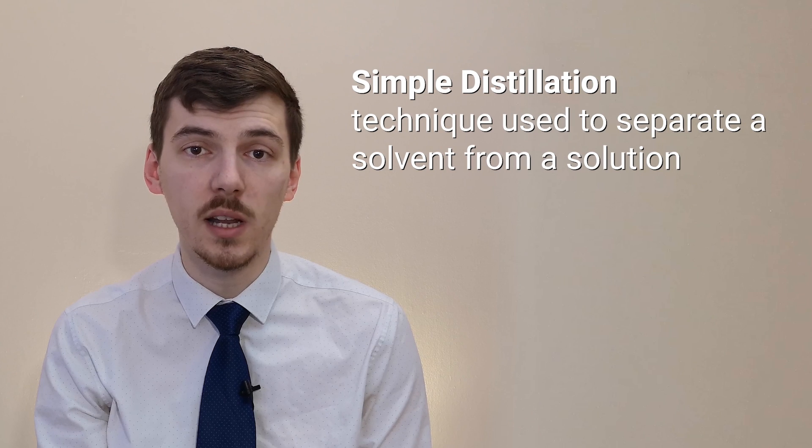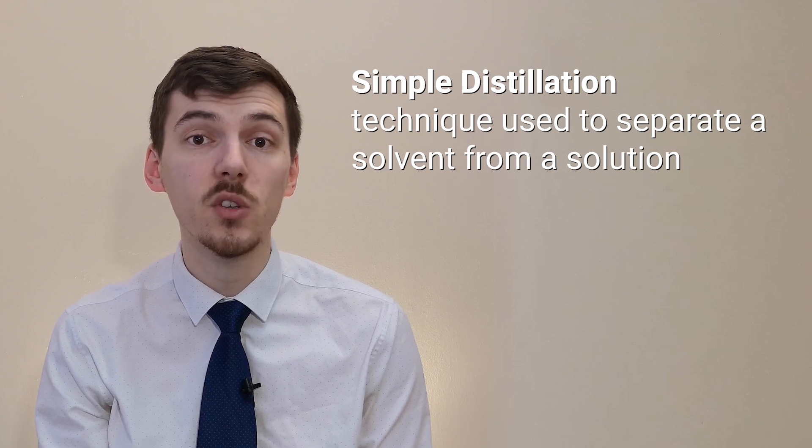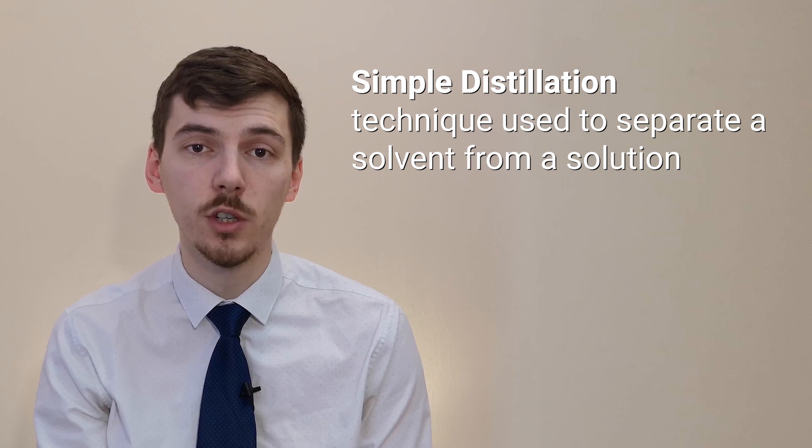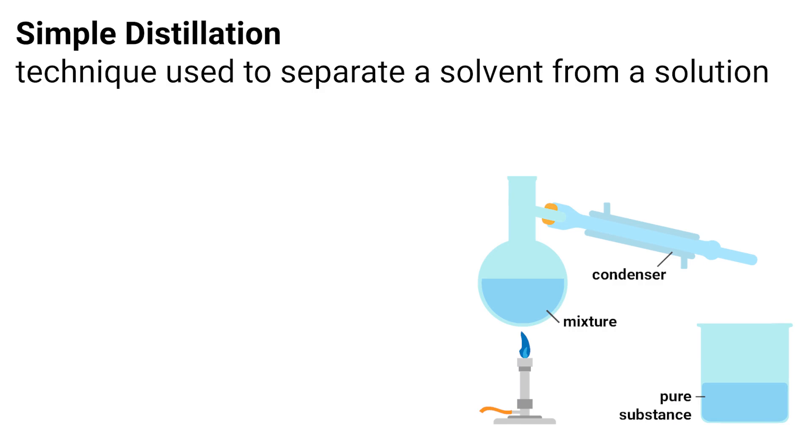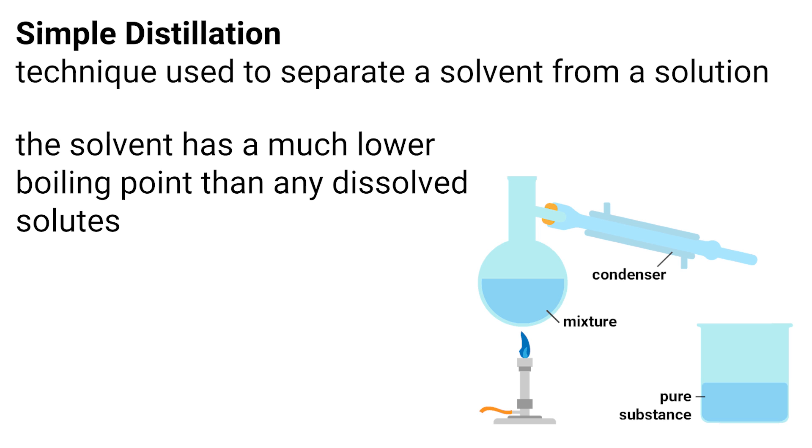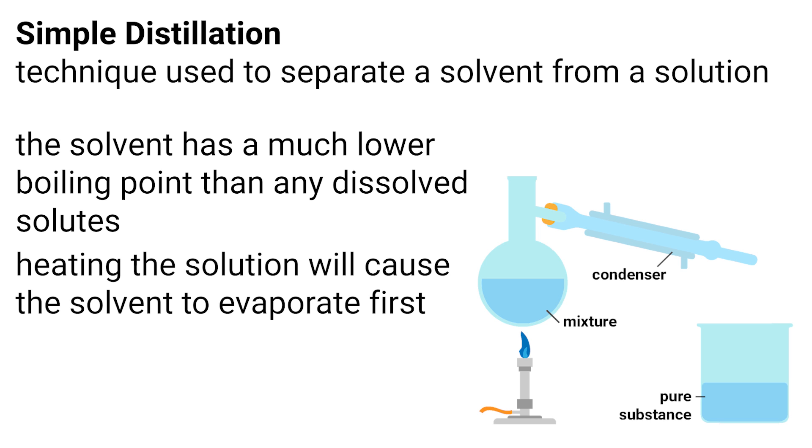Simple distillation is a separation technique that separates solvent from a solution. This method works because the solvent has a much lower boiling point than the dissolved solute. Heating the solution allows the solvent to evaporate and then it passes through a condenser where it is cooled and condensed into a separate container. The solute does not evaporate and so it stays behind in the original container.